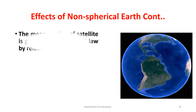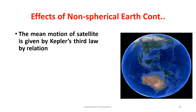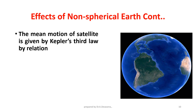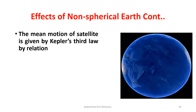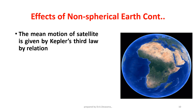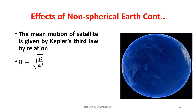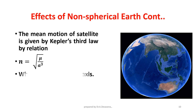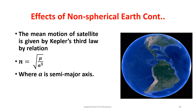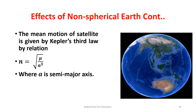Where n is in radians per second. The mean motion of the satellite is given by Kepler's third law, by the relation n = √(μ / a³), where a is the semi-major axis. This semi-major axis a is affected by Earth's obliqueness.